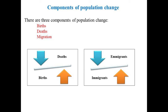If in any area the number of deaths is more, then the population of that particular area will decrease or remain stable. If there is a greater number of births, then population growth will increase. Similarly, if the number of immigrants into a particular area increases, population growth will increase, and if the number of emigrants from a particular area increases, population growth will decrease.